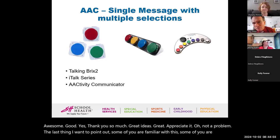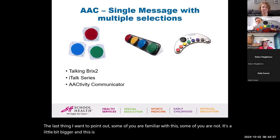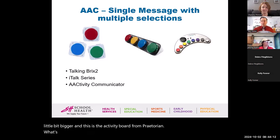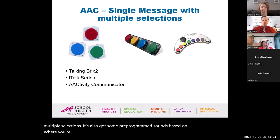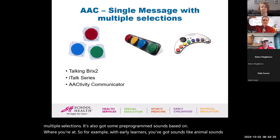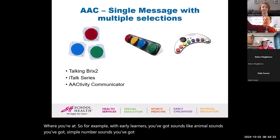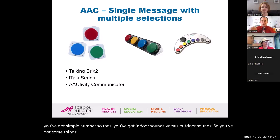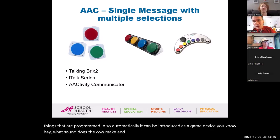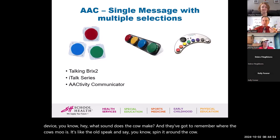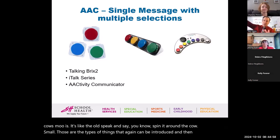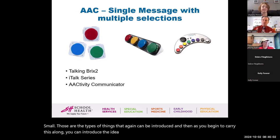Some of you may be familiar with this — it's the activity board from Praetorian. What's neat about the Praetorian activity board is it can be used in a group setting, has multiple selections, and has some pre-programmed sounds based on context. For early learners, you've got animal sounds, simple number sounds, indoor versus outdoor sounds. So automatically it can be introduced as a game device: 'what sound does the cow make?' It's like the old Speak and Say. As you carry this along, you can introduce the idea of multiple selections.